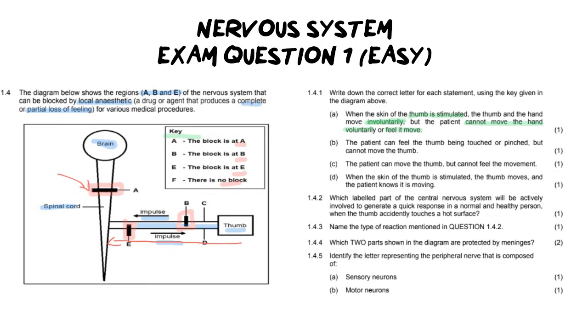Now if we move on to the next one it says the patient can feel the thumb being touched or pinched but cannot move the thumb. So that means they have a sense but they don't have a motor function. And if we look at our diagram here, and it's really important to look at our incoming and outgoing flow of impulses, we can see that the ingoing impulse, in other words the one going towards the thumb, this one over here, that is our motor.